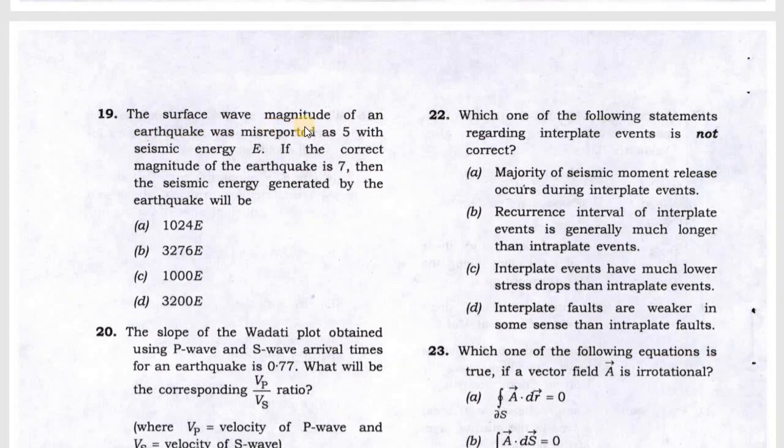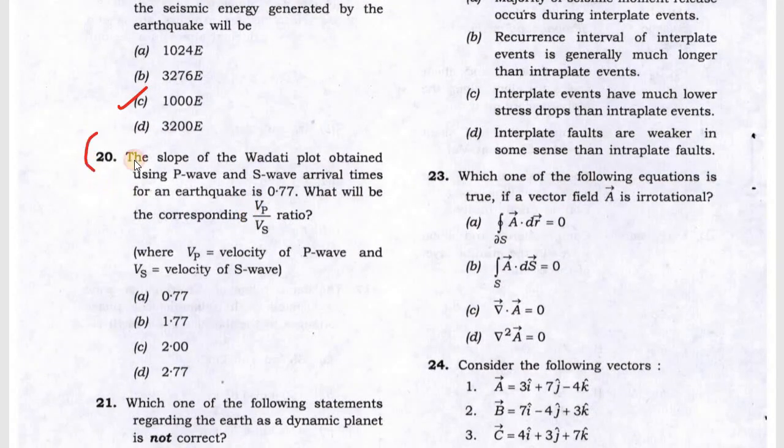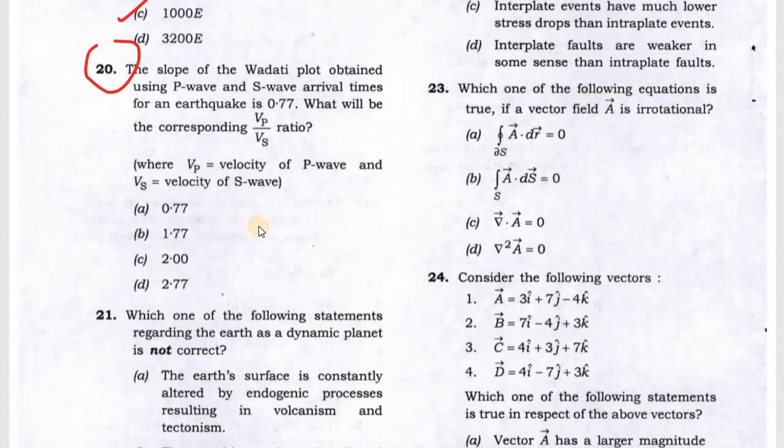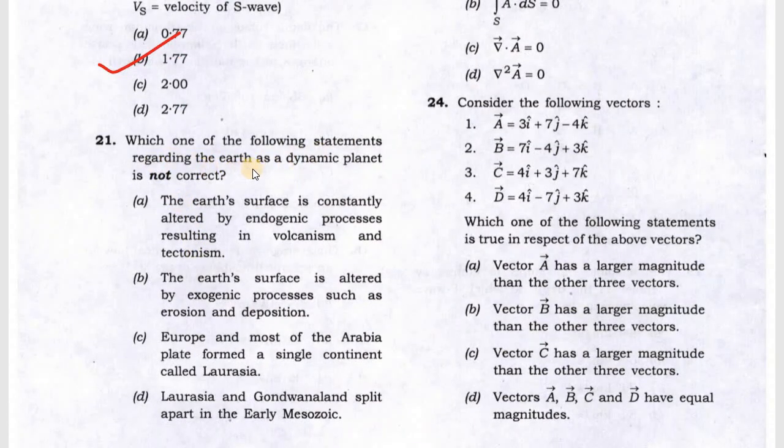Next, the surface wave magnitude of an earthquake was misreported as 5 with seismic energy, and if the correct magnitude is 7, then the seismic energy generated by the earthquake will be what? This question is asked thrice, meaning questions 20, 21, and 22. This will be the C answer: 1000 times the energy. Next question 20 is asking the slope of the Wadati plot for P and S wave arrival times of an earthquake. What is the corresponding Vp and Vs ratio? This is B will be the correct one.